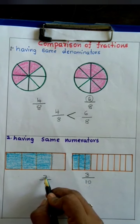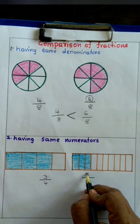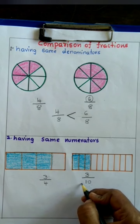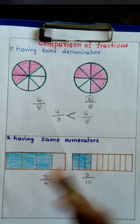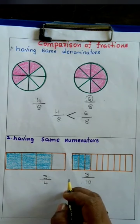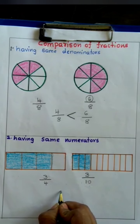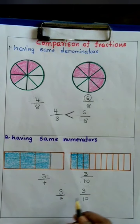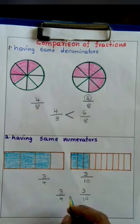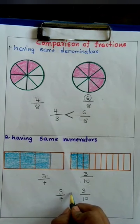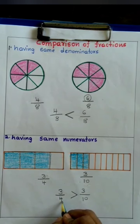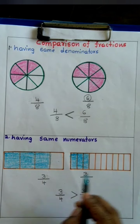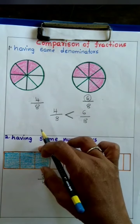To repeat: when the numerators of the fractions are the same, the fraction with the smaller denominator is greater and the fraction with the greater denominator is smaller — just the opposite or reverse. So symbolically, 3/4 > 3/10. More cake was distributed from the first packet.